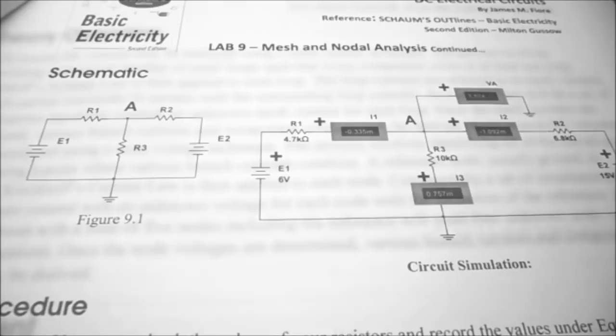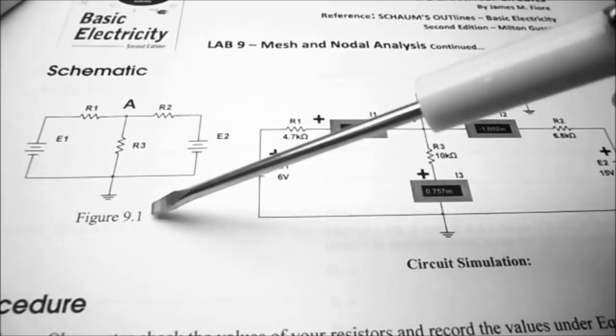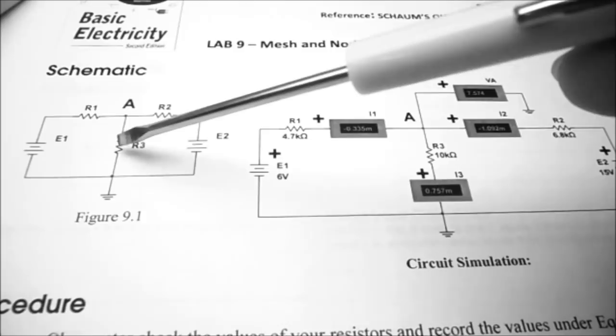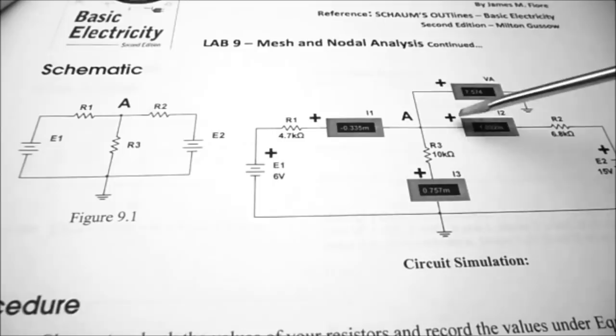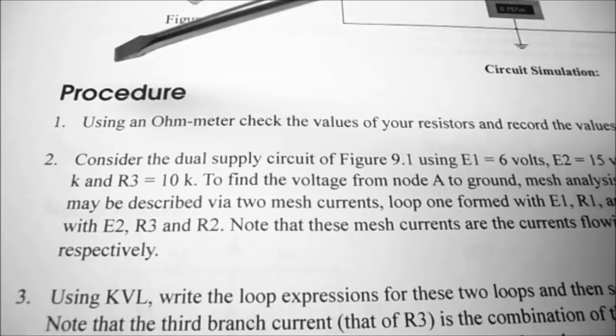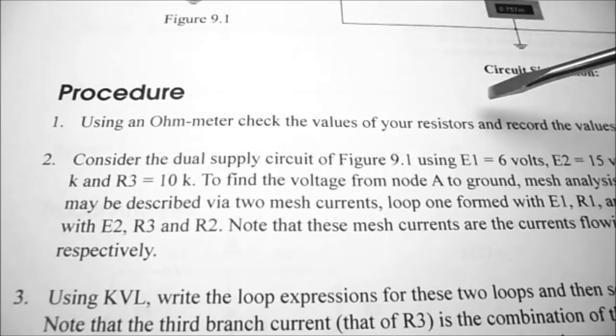Under the schematic, figure 9.1 is a fairly simple circuit. We have two power sources and three resistors. I've done a circuit simulation so we can find out what each of the node currents are supposed to be, as well as the voltage at point A. Under procedure step number one, it says using an ohmmeter, check the values of your resistors and record the values under equipment.